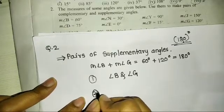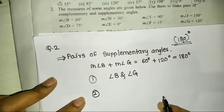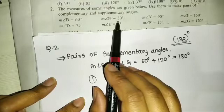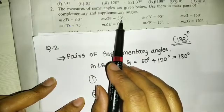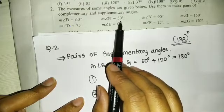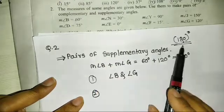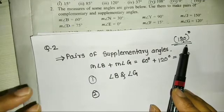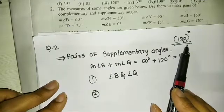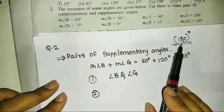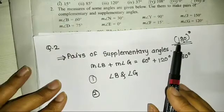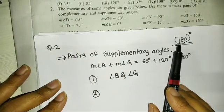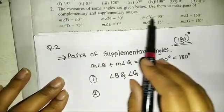The second pair. The measurement of angle N is 30 degrees. To find the supplementary angle, subtract 30 from 180 degrees. The supplementary angle is 150 degrees.